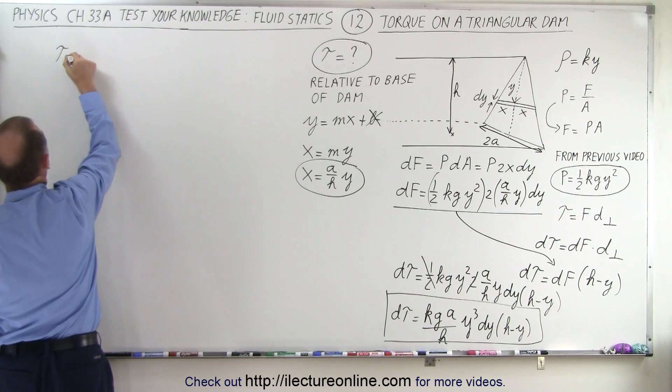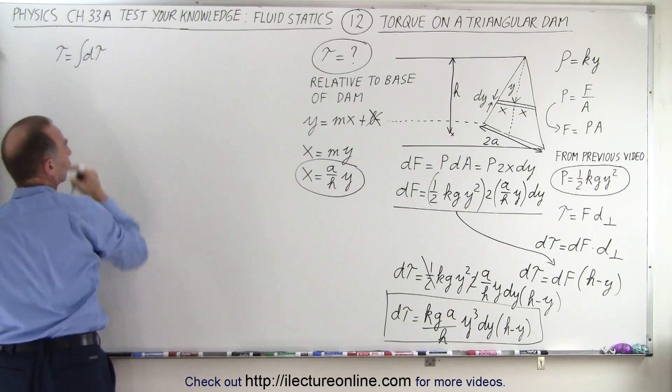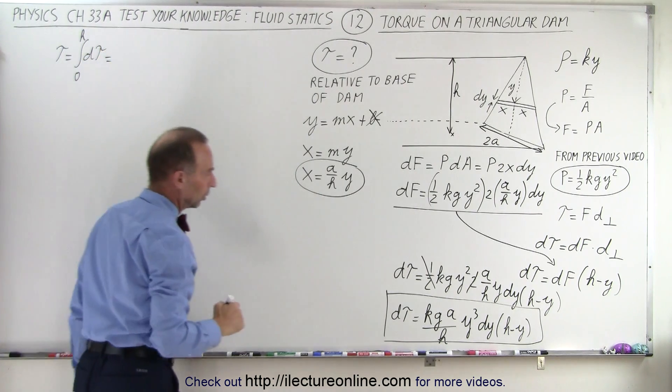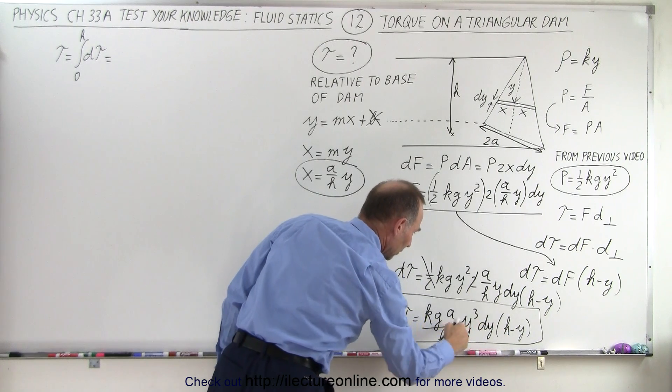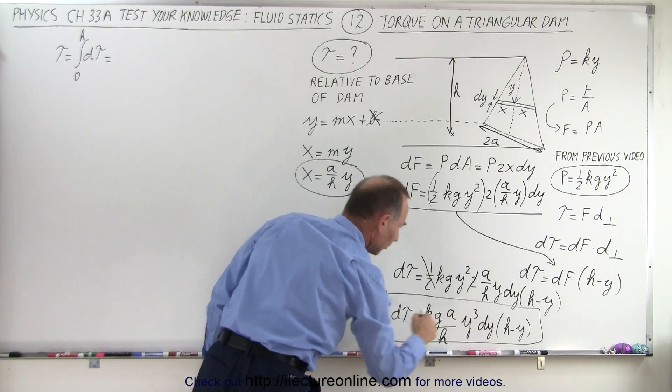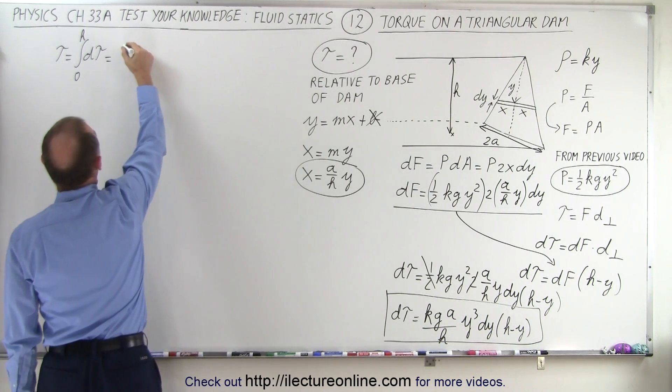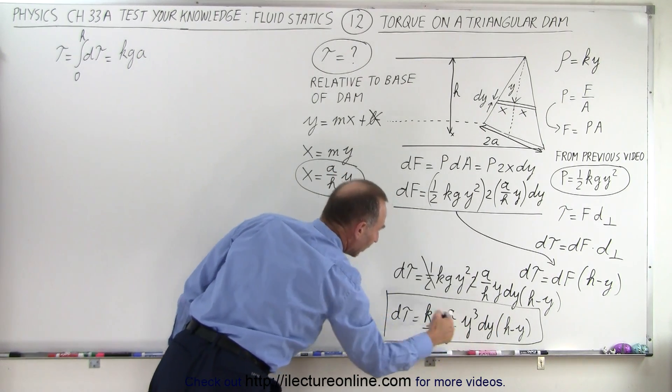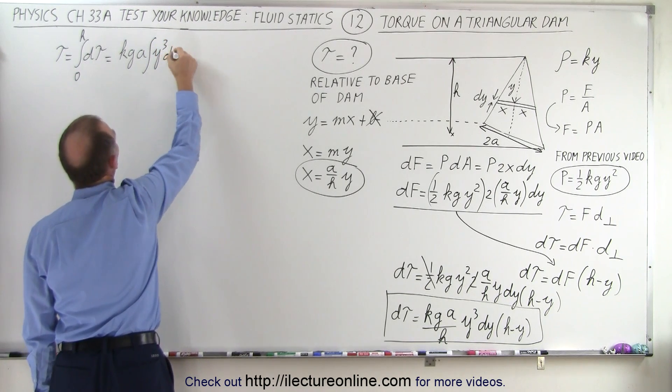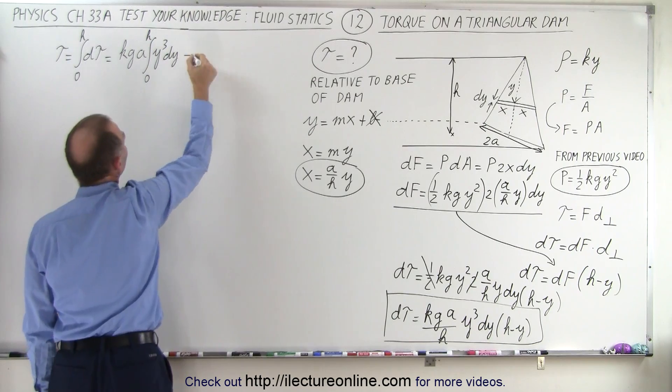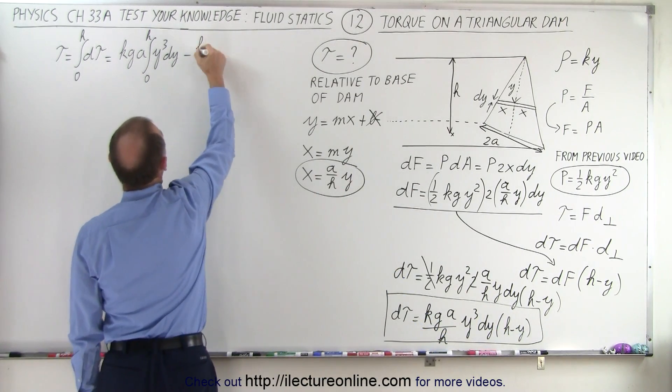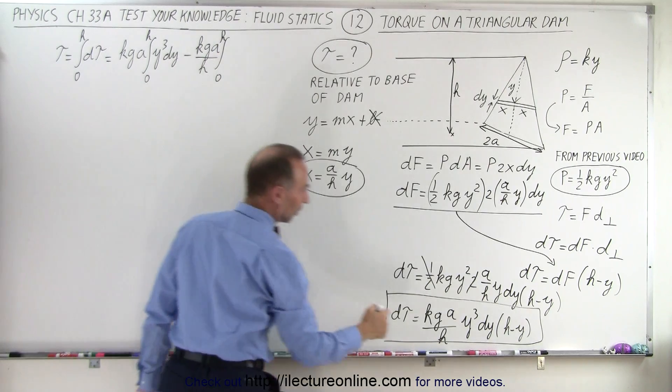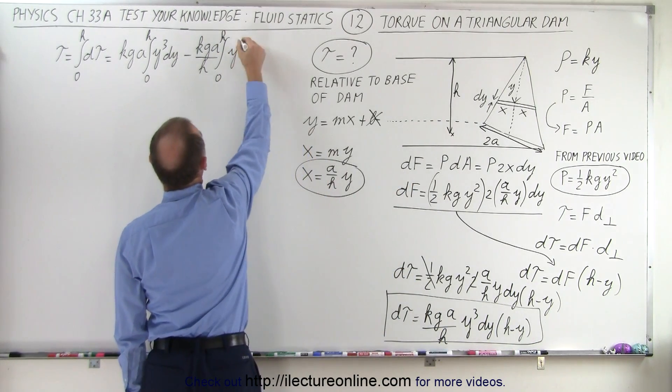So now we can write that the torque is equal to the integral of the d torque. And of course, we're going to integrate from y equals 0 to y equals h. From 0 to h, which is equal to... The first integral is going to be this times H. So the H's would cancel out. We end up with Kg A times the integral of y cubed dy. That would be Kg A. The H and that H cancels out. And we have times the integral of y cubed dy from y equals 0 to y equals h minus... When I multiply this times y, I get Kg A over h, because the H's don't cancel, times the integral from 0 to h of y cubed times y. That would be y to the 4th dy.